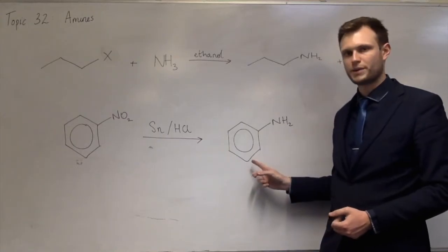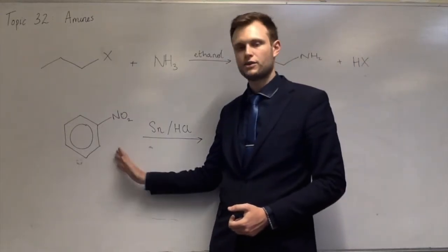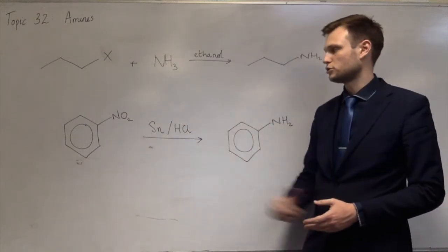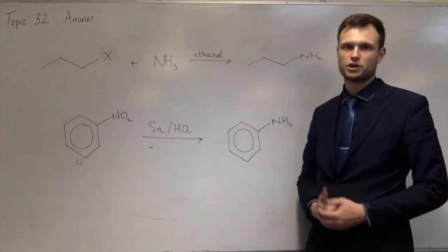so an NH2 onto a benzene ring, then what you do is you reduce NO2, a nitrobenzene, to an amine. And you do that using tin and concentrated hydrochloric acid.